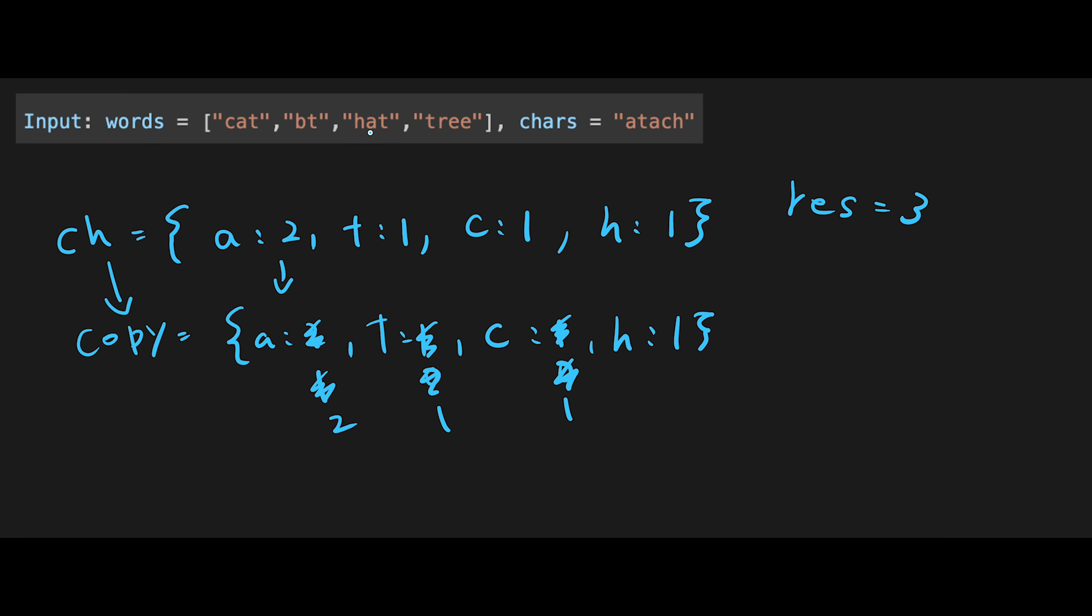Then next word is hat. Before that, update, not update, copy hash map to copy variable: 2, 1, 1, 1. In this case, h should be 0 and a should be 1 and t should be 0. And we can create hat with these characters, right?